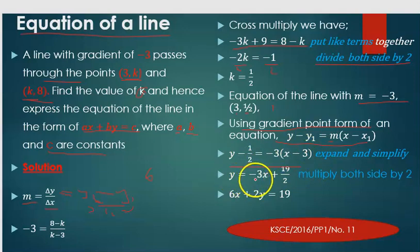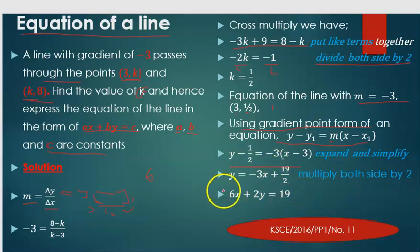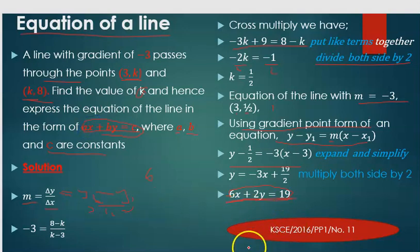Multiplying through by 2 gives 2y equals negative 6x plus 19. Rearranging, starting with the x term, we get 6x plus 2y equals 19. This expresses the equation in the required form ax plus by equals c.